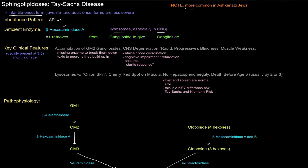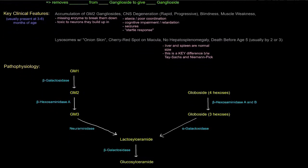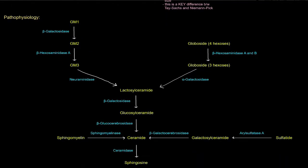So what does that enzyme do? If we scroll down here and look at the pathophysiology, this is all the breakdown of sphingolipids. Beta-hexosaminidase A shows up right here. It breaks GM2 gangliosides into GM3 gangliosides by removing an N-acetylgalactosamine.